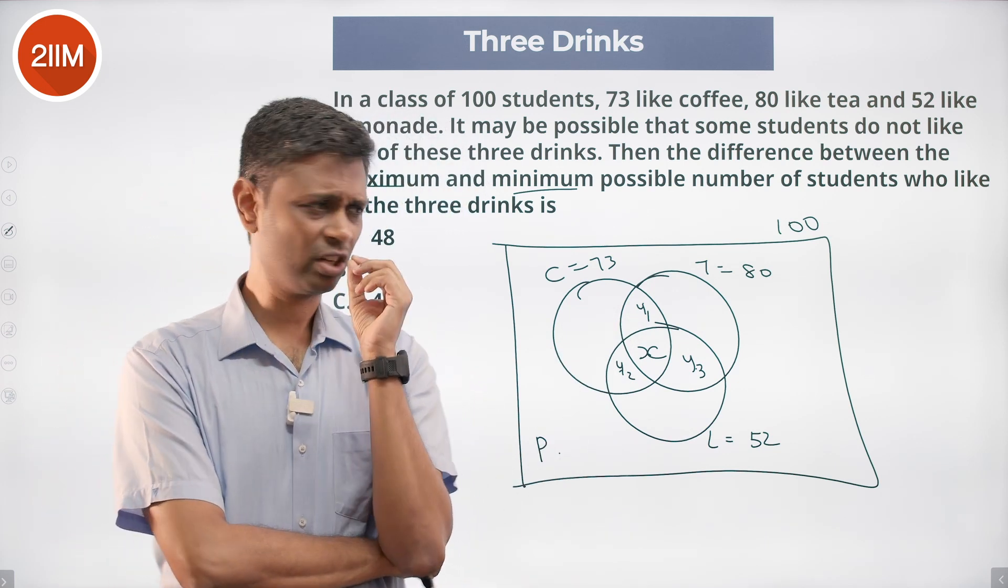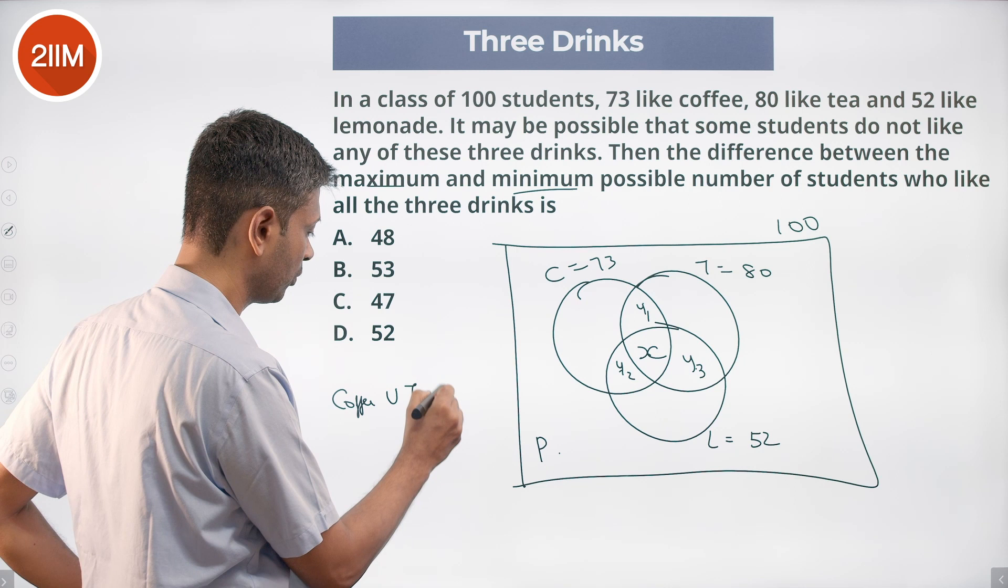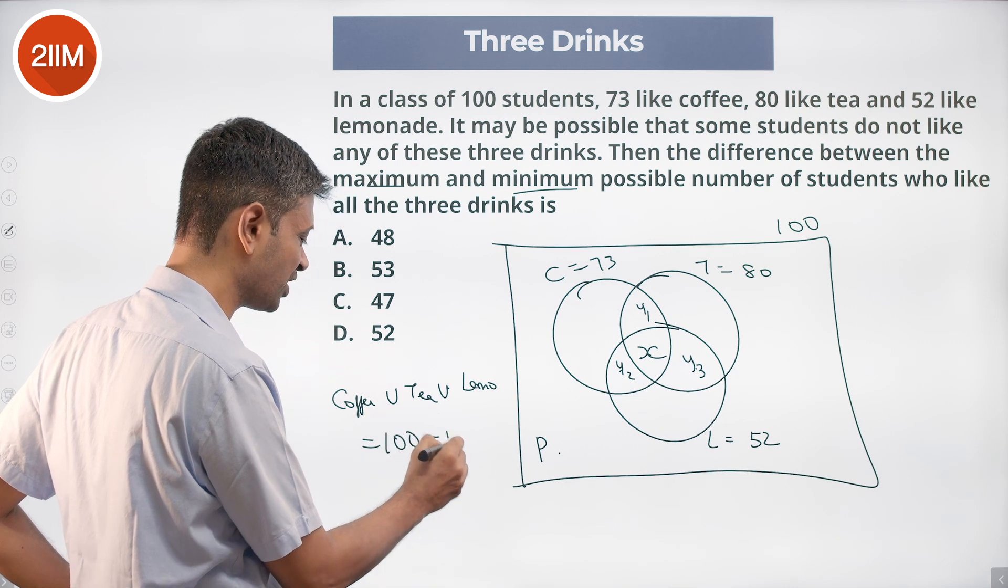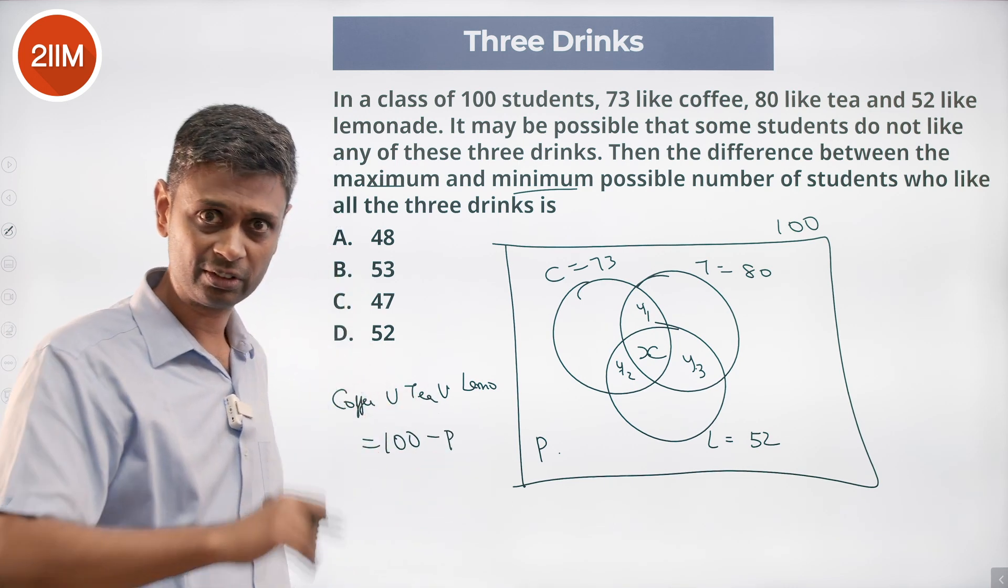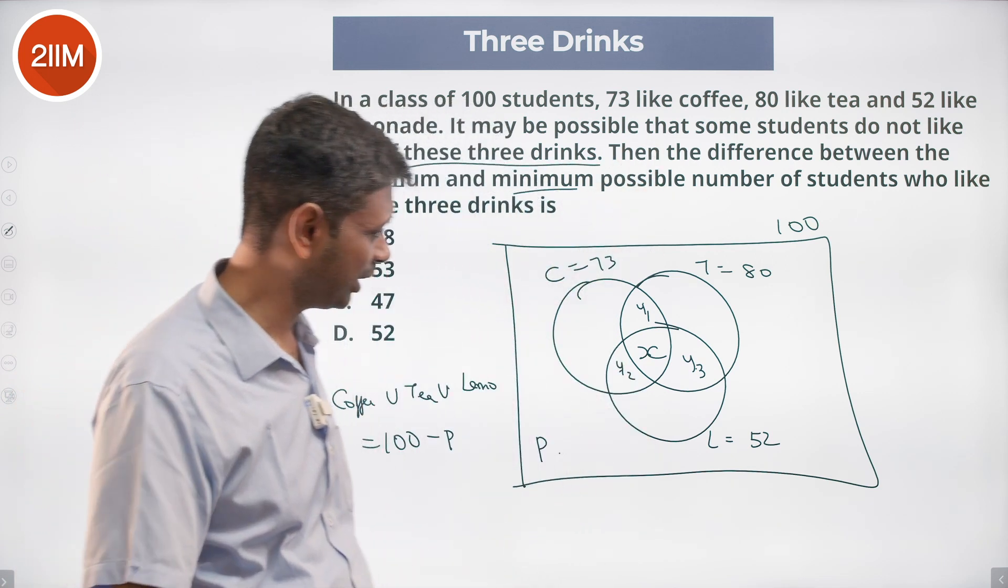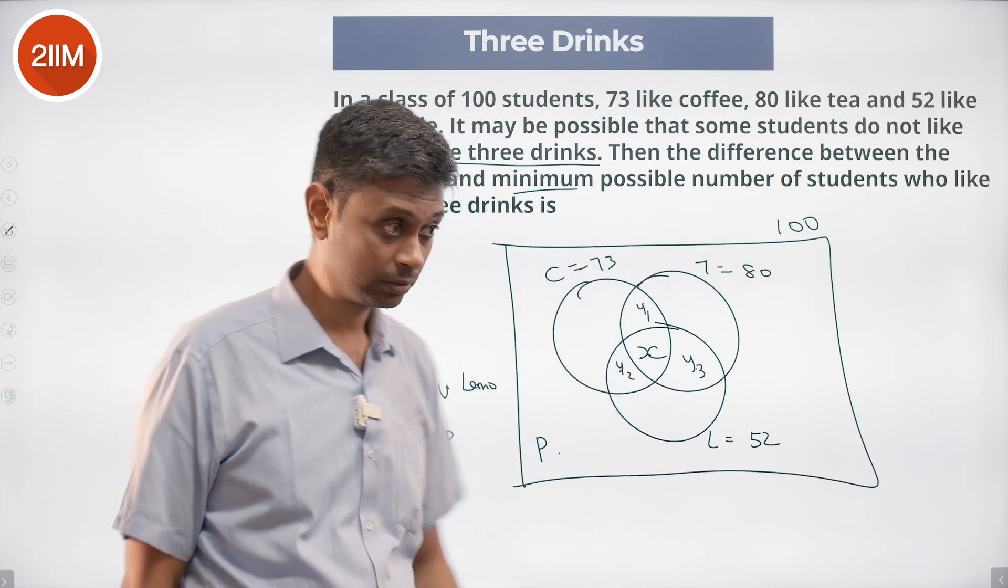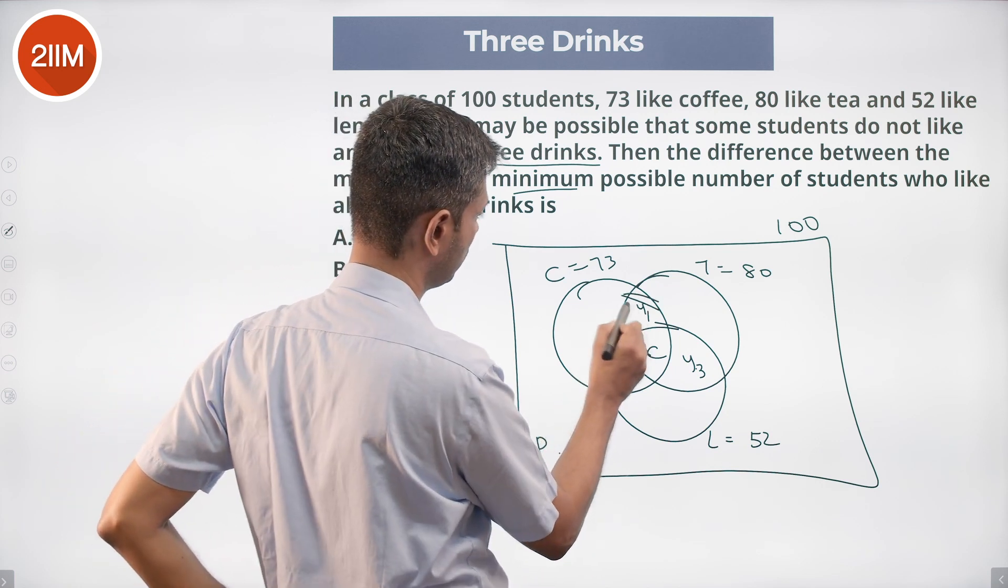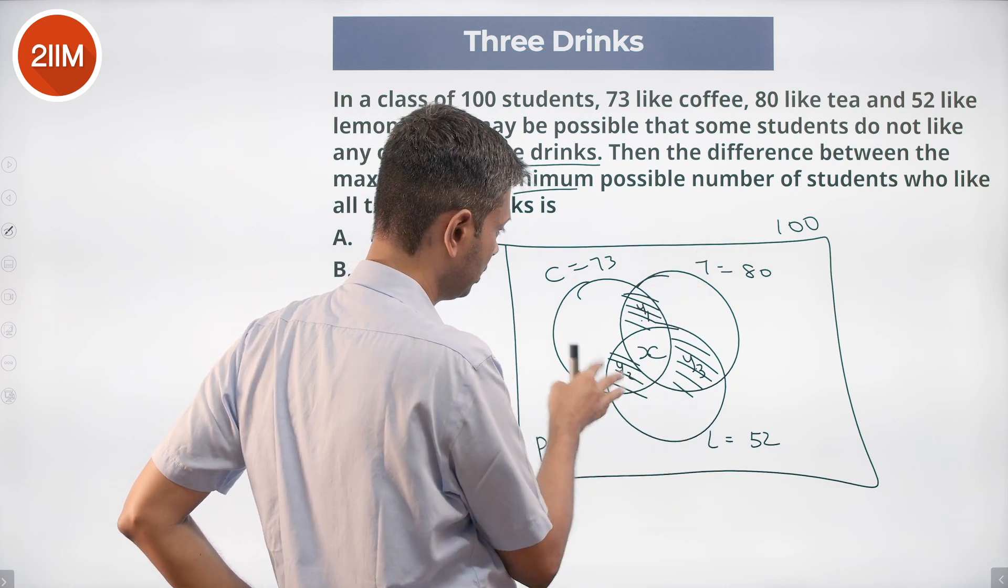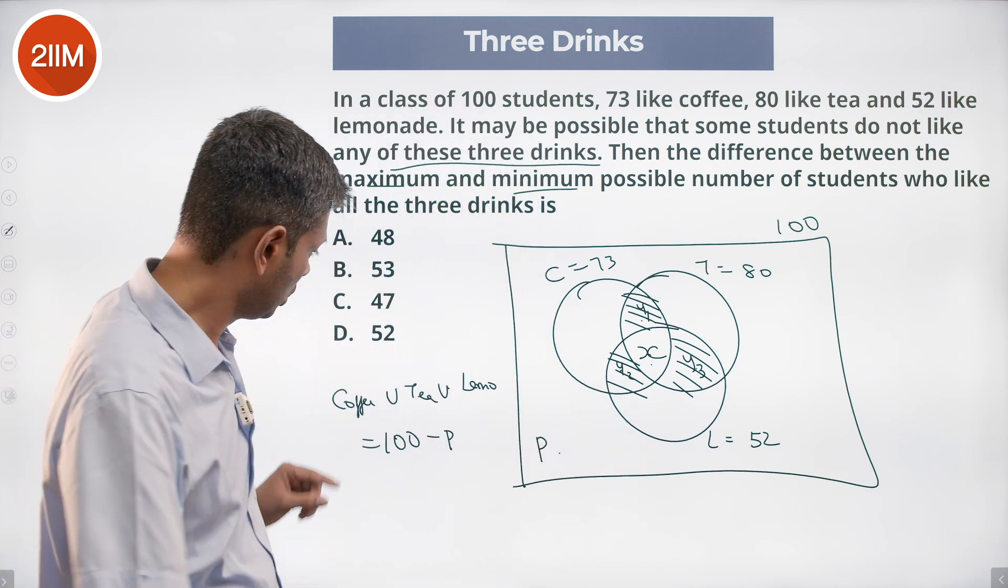Now if I add C, T and L - that is coffee, tea and lemonade - I'm interested in finding coffee union tea union lemonade. This number is 100 minus p. Chances are we'll put p as 0 and then simplify this, but I still want to put p because I said some students do not like any of these three. That's given, so 100 minus p. My starting point is: add coffee, add tea, add lemonade. I'm going to do that. If I do that, then this gets added twice - this appears in coffee and tea, this appears in tea and lemonade, this appears in coffee and lemonade, and this fellow gets added thrice.